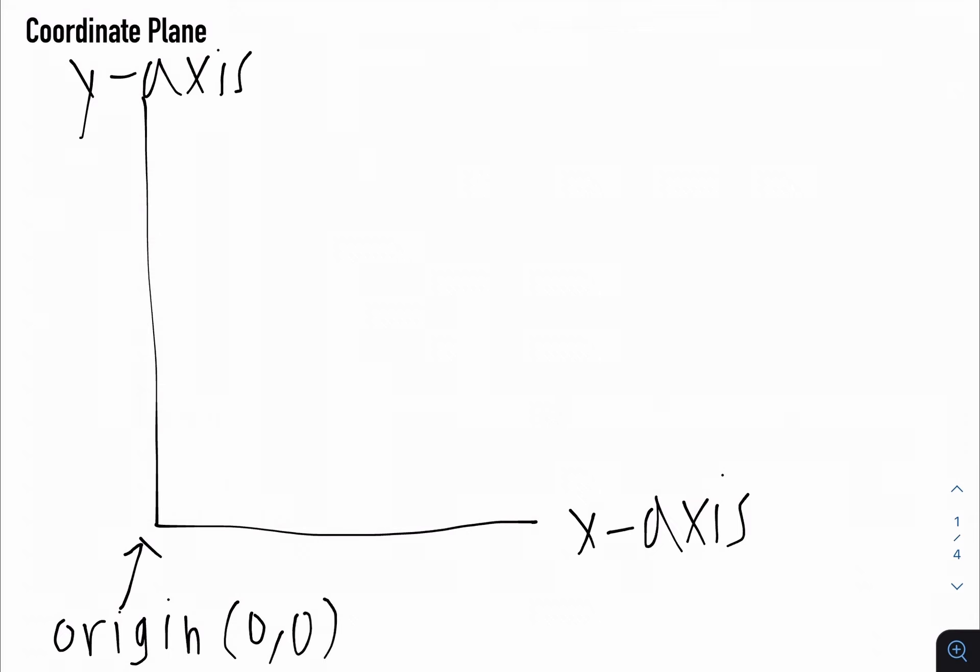So what does that mean? Usually when we graph points, we use something called an ordered pair. And you can write that as (x, y), where the x represents the horizontal position, and the y represents the vertical position.